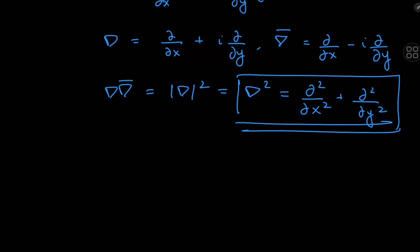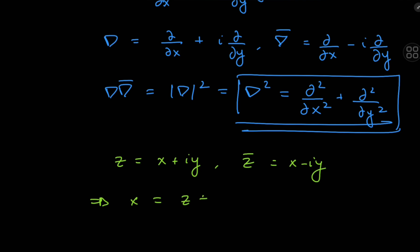You gotta admit that's cool, but why is it relevant? Well, recall that we can write z as its real part x plus i times y. We can treat z and z-bar as functions of x and y, or we could solve these two equations for x and y and express x and y in terms of z and z-bar. So x equals (z + z-bar)/2, and y equals (z minus z-bar) divided by 2i. In this case, we're treating x and y as functions of z and z-bar.